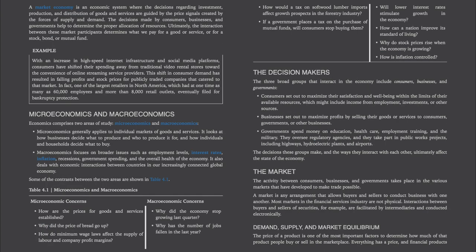A market economy is an economic system where the decisions regarding investment, production, and distribution of goods and services are guided by the price signals created by the forces of supply and demand. The decisions made by consumers, businesses, and governments help to determine the proper allocation of resources. Ultimately, the interaction between these market participants determines what we pay for a good or service, or for a stock, bond, or mutual fund.